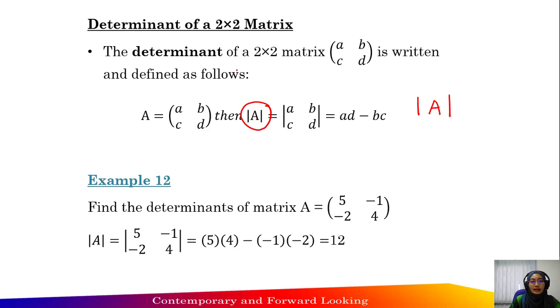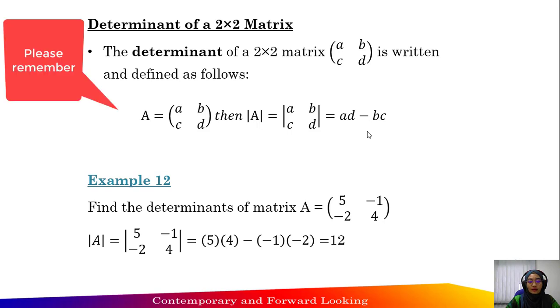The determinant of a 2 by 2 matrix A, B, C, D is written and defined as follows. Given matrix A, the determinant of matrix A equals the product of A and D minus the product of B and C.